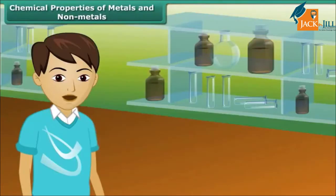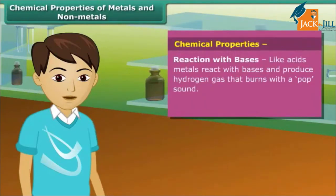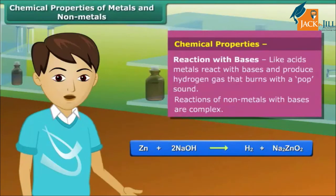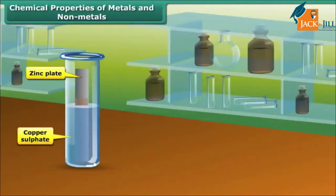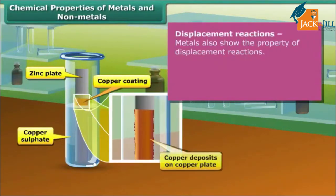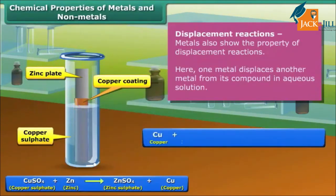Now let's know about the reaction of metals and non-metals with acids. Metals react with acids and produce hydrogen gas, while non-metals don't react with acids. You will be surprised to know that, like acids, metals also react with bases and produce hydrogen gas. Non-metals react with bases differently. Besides these, metals also show the property of displacement reactions.